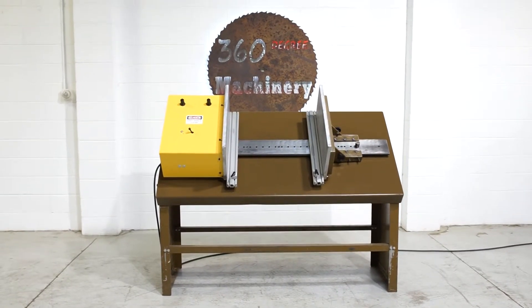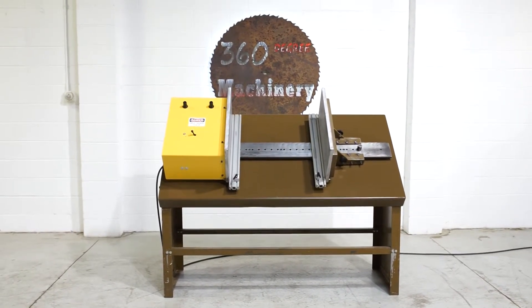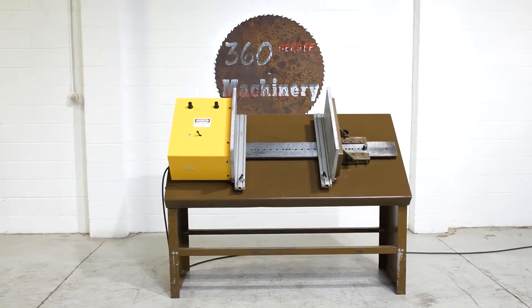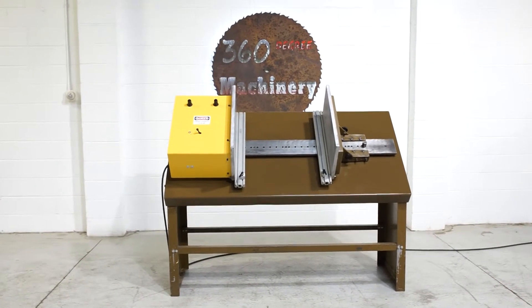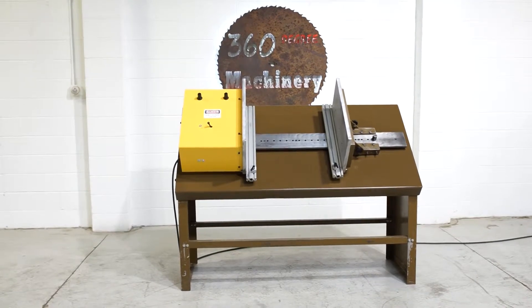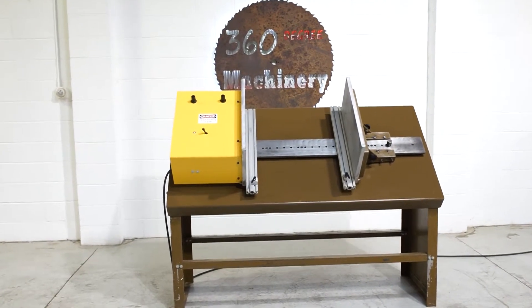Welcome to 360 Degree Machinery. We're going to do a walkthrough of a Ritter R875SP drawer clamp. If you have questions about pricing or availability, please go to 360degreemachinery.com.